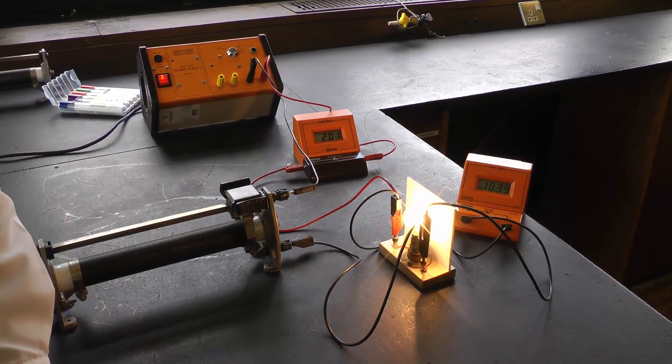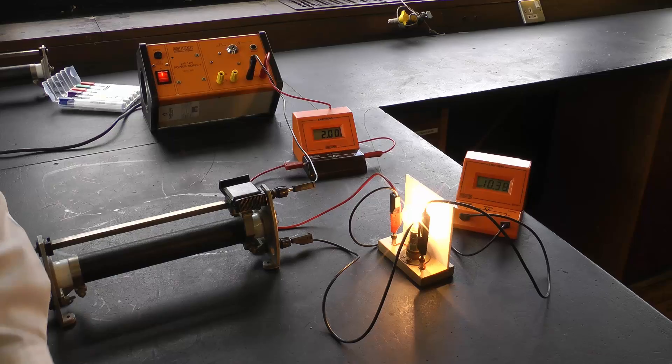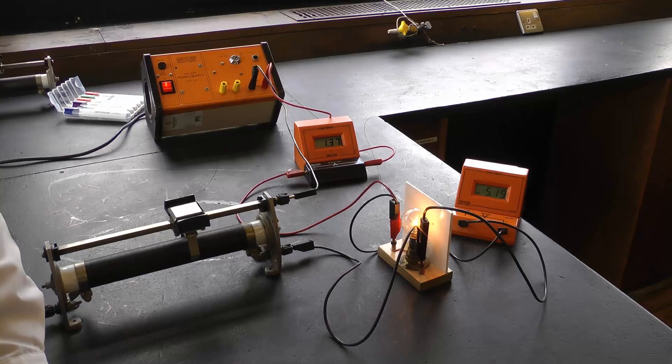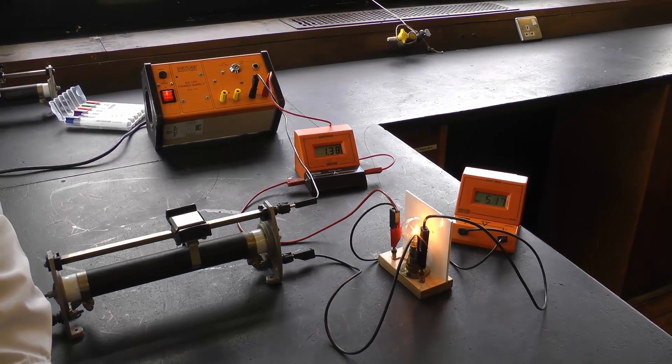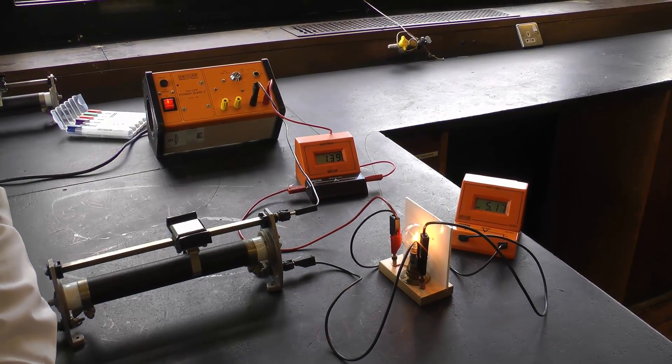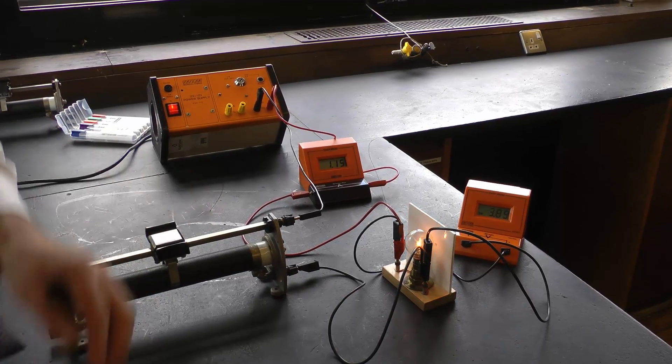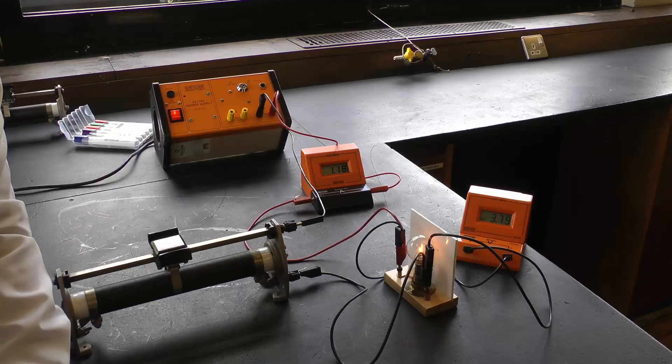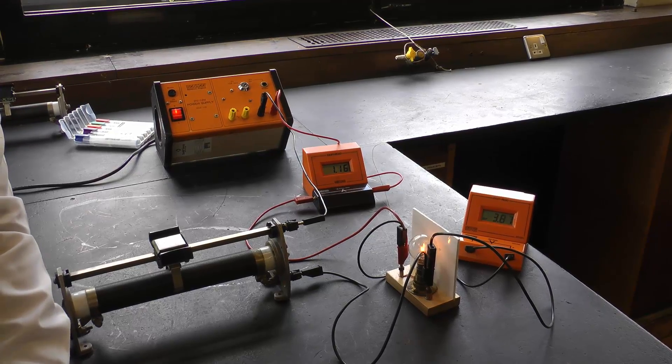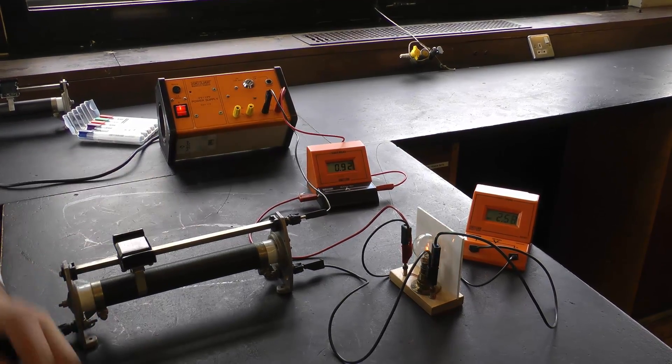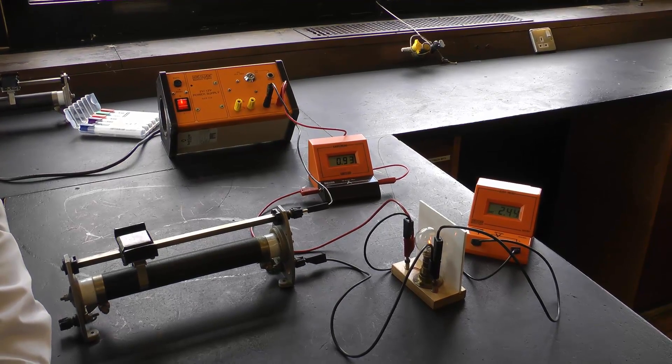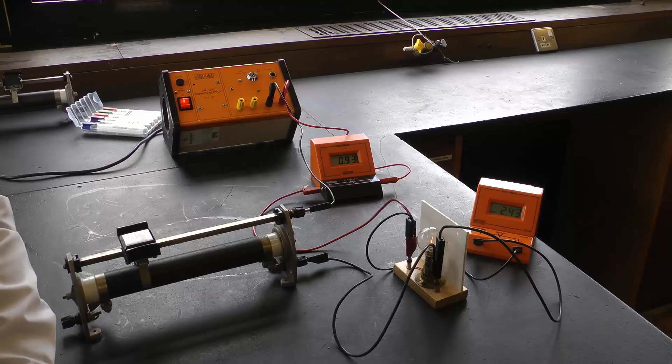So now positive 10.37 volts, positive 2.01 amps. I'm just going to grab a couple of values: 5.19 volts positive, 1.39 amps current, then 3.80 volts and 1.17 amps.